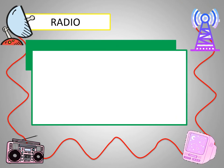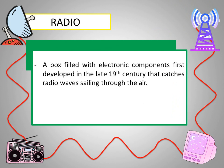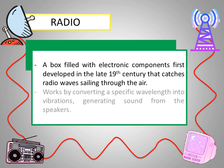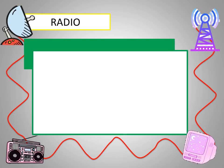What is a radio? A radio is a device with electronic components first developed in the late 19th century that catches radio waves sailing through the air. It works by converting a specific wavelength into vibrations, generating sound from the speakers. The radio has two types: the analog radio and digital radio, but in this lesson we are going to focus on analog radio.